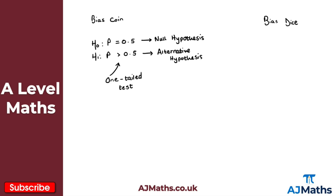With a one-tailed test, the alternative hypothesis might not necessarily be strictly greater than — it can also be strictly less than. For example, H1 with parameter p strictly less than 0.25 is also an example of a one-tailed test.